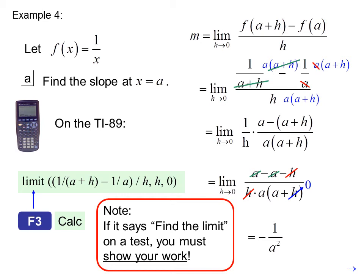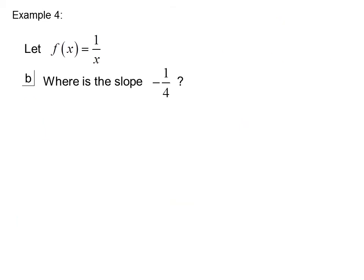What we found in this problem, by the way, was a general expression for the slope at any point. Where is the slope negative one-fourth? If we set negative one-fourth equals negative 1 over a squared, we get a squared equals 4, or a equals plus or minus 2.